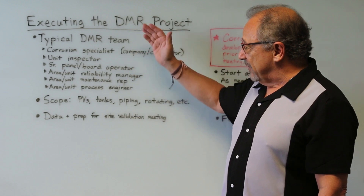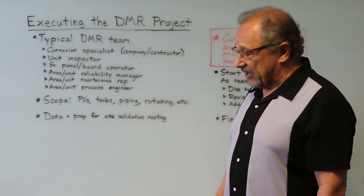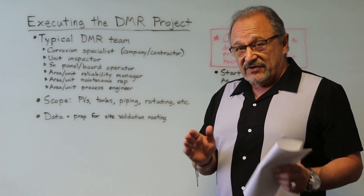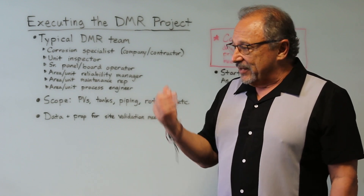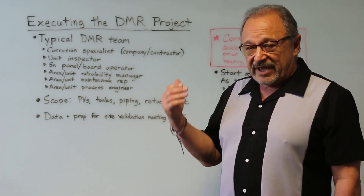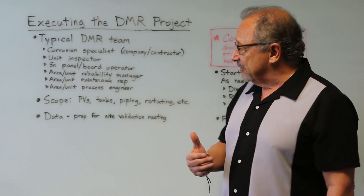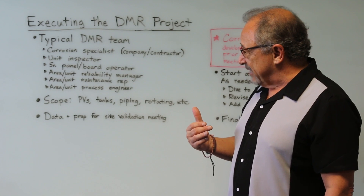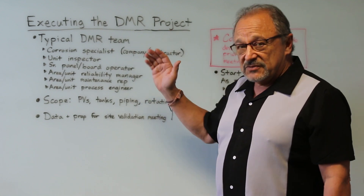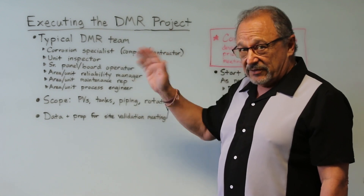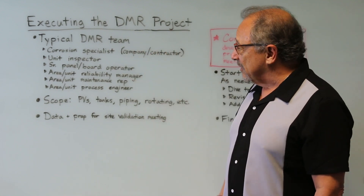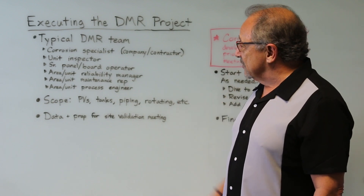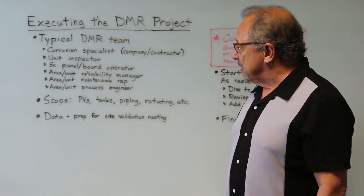Those are all very important people to have. In the last session we talked about what kind of information is needed — mechanical information, operating information, and metallurgical and materials information. If you want to know more about that, refer back to the last installment in this series on DMRs.